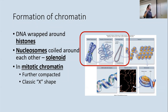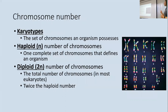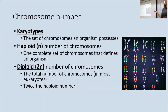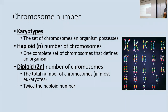All your chromosomes condensed down into mitotic chromatin form a karyotype — the complete set of chromosomes that a person possesses in all their cells. We can describe chromosomes with two numbers: the haploid number and the diploid number. The diploid number — all 46 chromosomes — is your diploid count; you have two copies of everything.